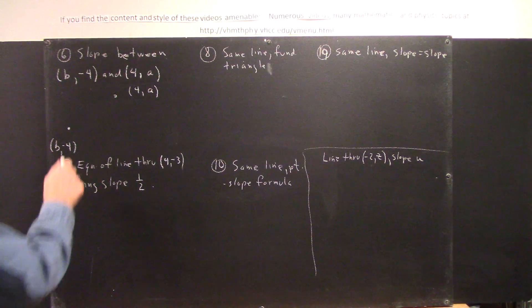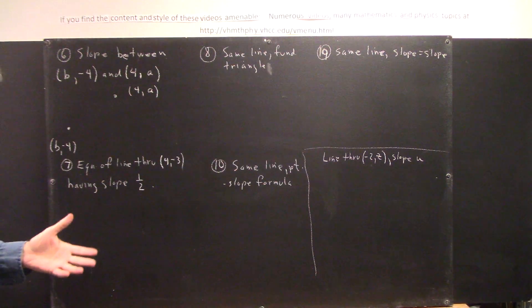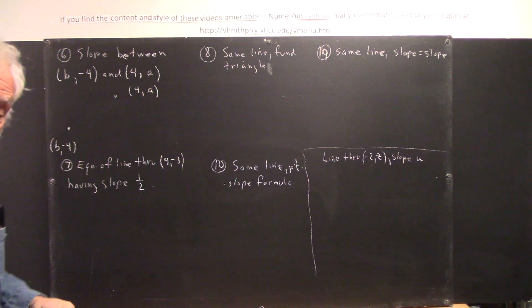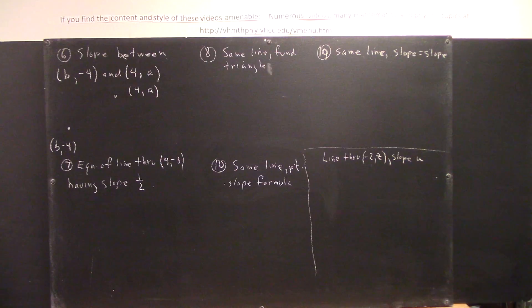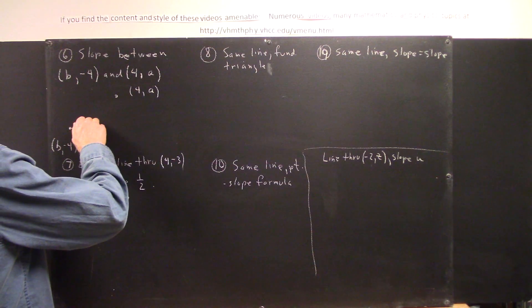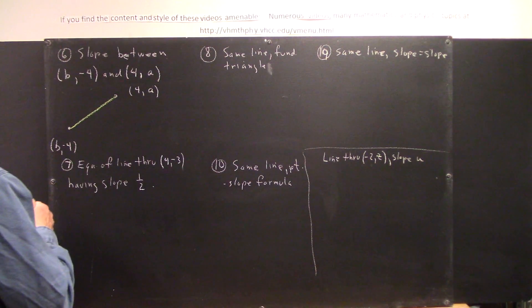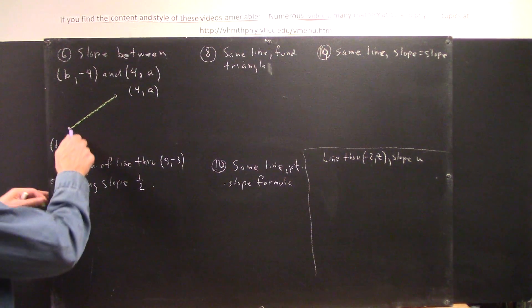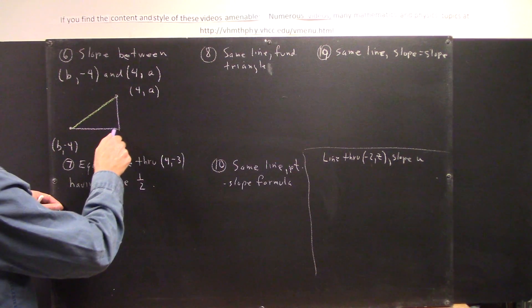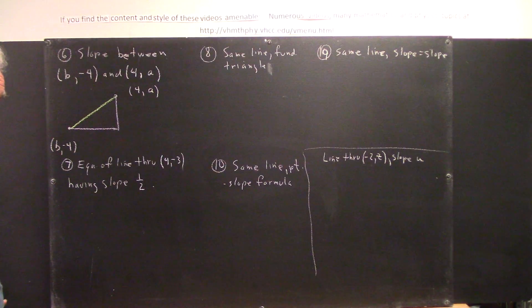Now, when we have two points, we can always get a lot of information about those points by constructing a fundamental triangle. So, we construct our fundamental triangle with a hypotenuse connecting the two points,